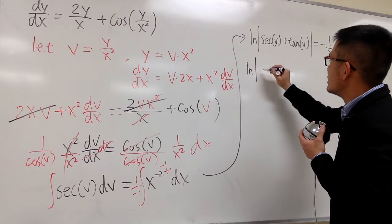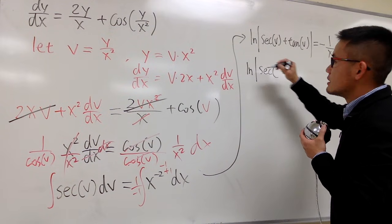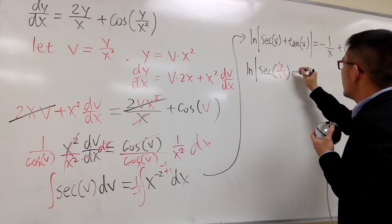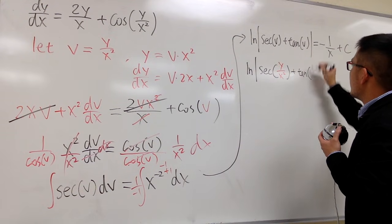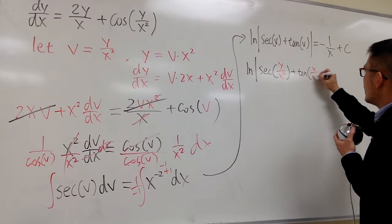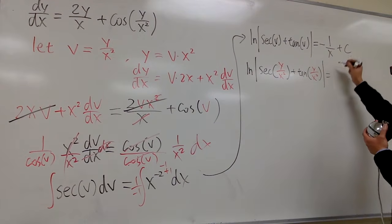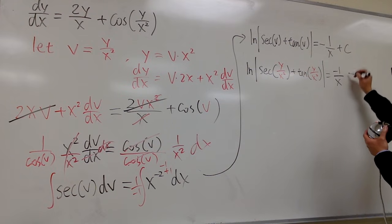ln absolute value, this is secant, v is y over x squared, and then plus tangent, and then this is y over x squared as well, for the v. At the end, this is equal to negative 1 over x plus c.